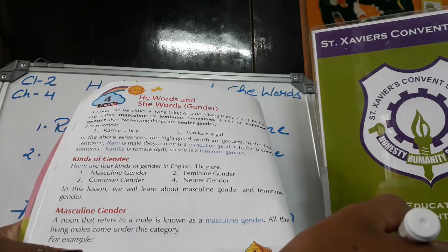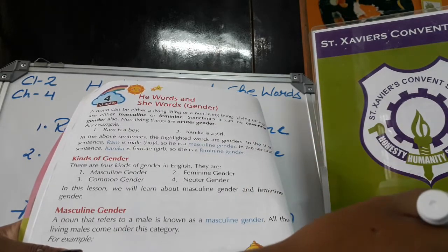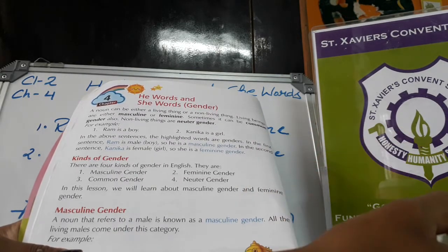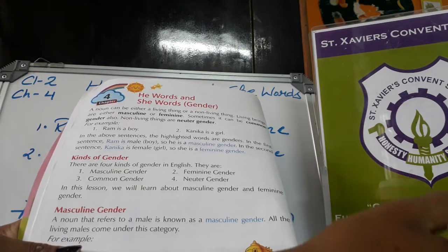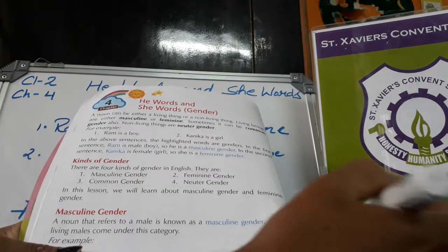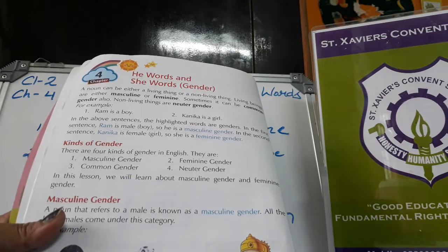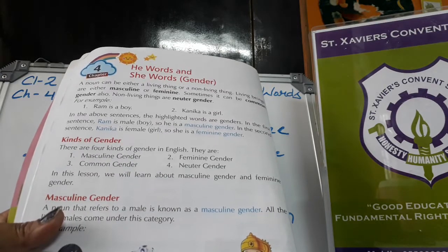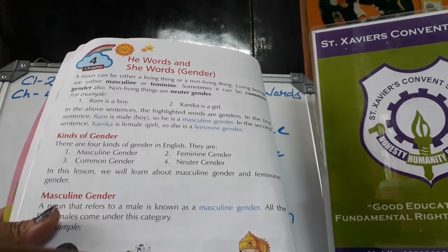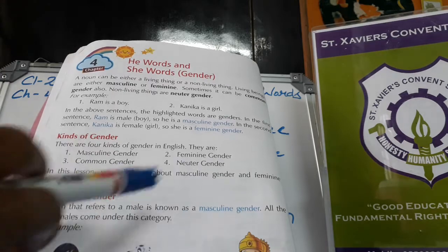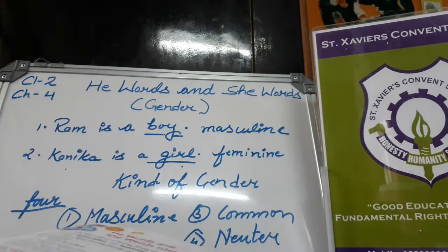In this category, all male birds are also included. Boy, dog, and king are examples of masculine gender.